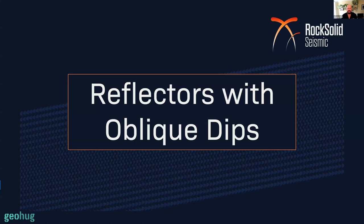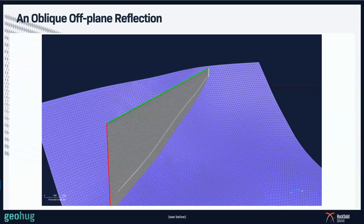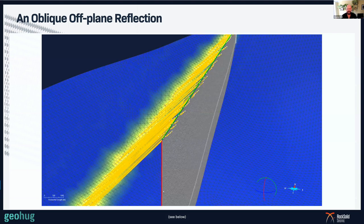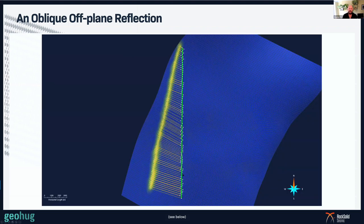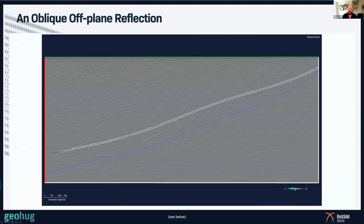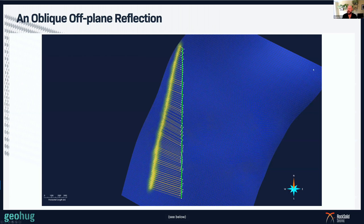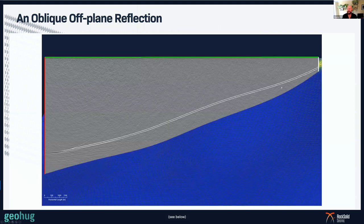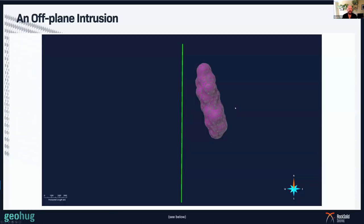What about reflectors with oblique dips? We still have to think of these as a distance rather than a depth. Here is our seismic line and the illumination model shows the illumination moves further away from the seismic line. The response we see from that shows this reflector appearing shallower at one end but getting closer to the seismic line towards the end of the line — because up there the illumination model says we're close to the seismic line, giving a response that appears shallower.